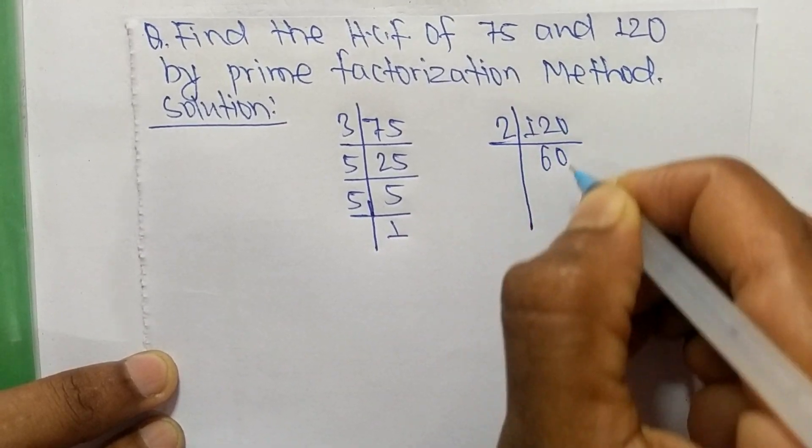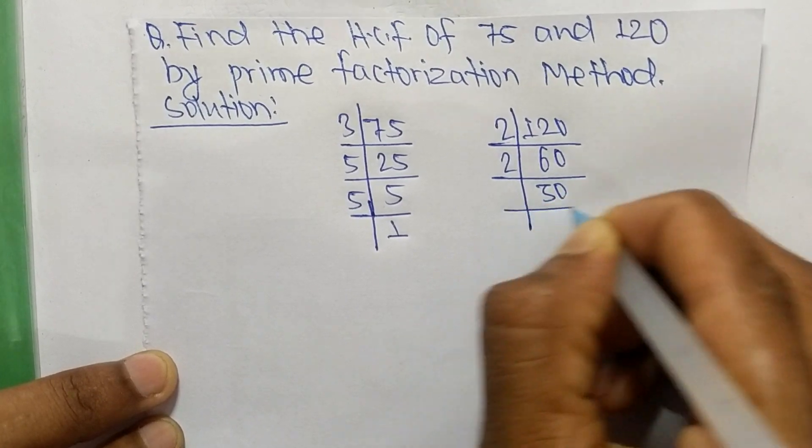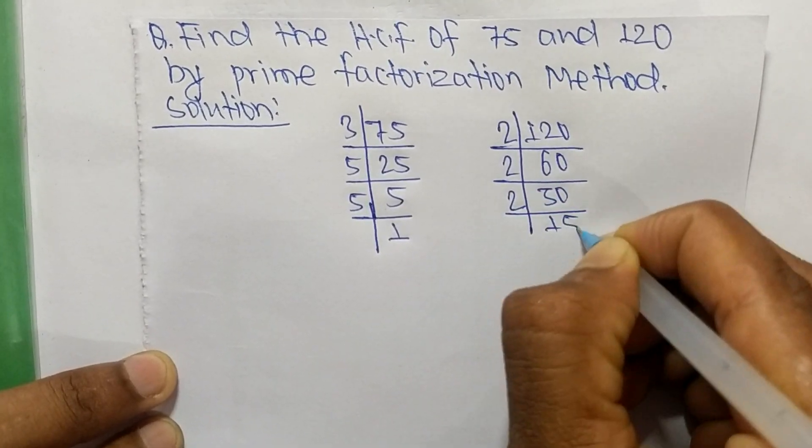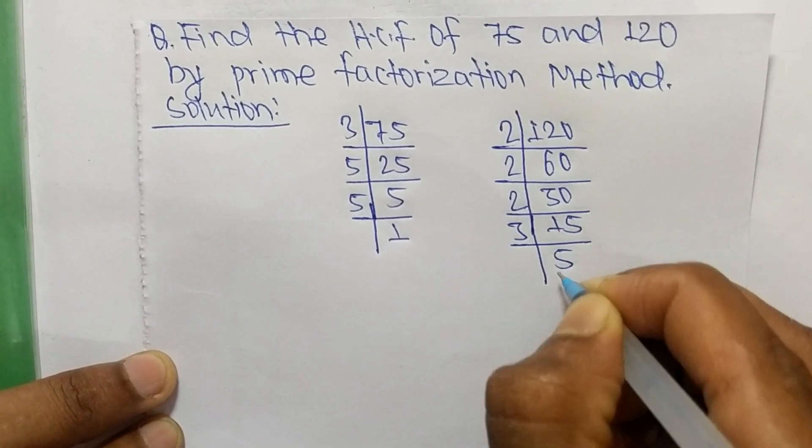It is 2 times 60 equals 120, 2 times 30 equals 60, 2 times 15 equals 30, 3 times 5 equals 15, and 5 times 1 equals 5.